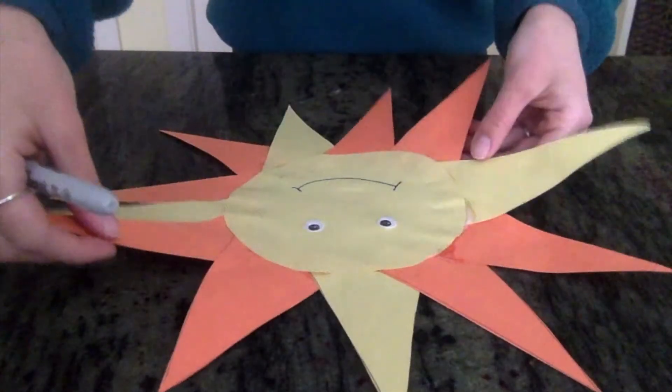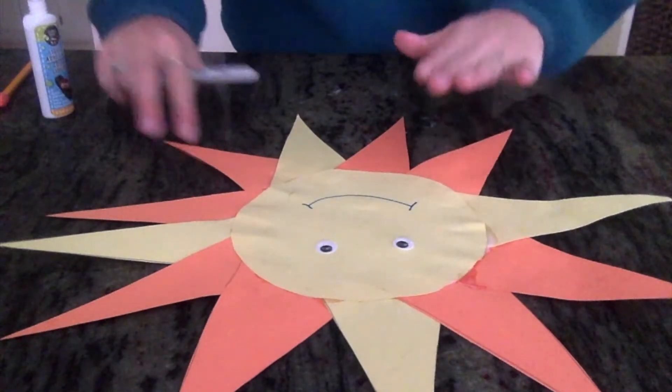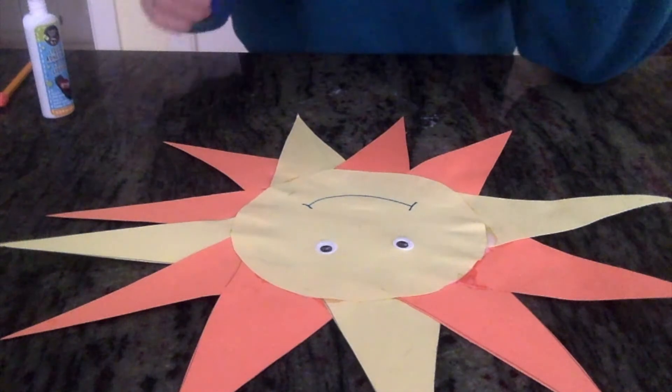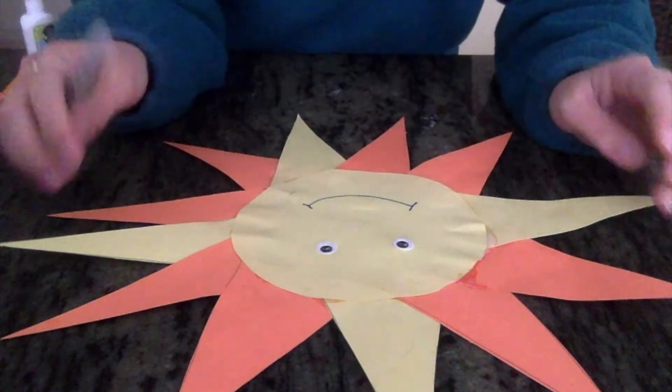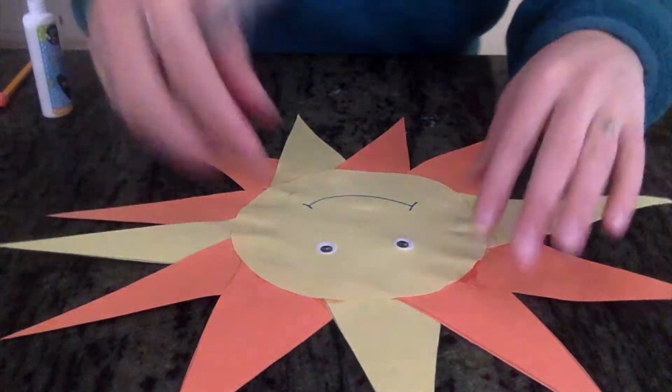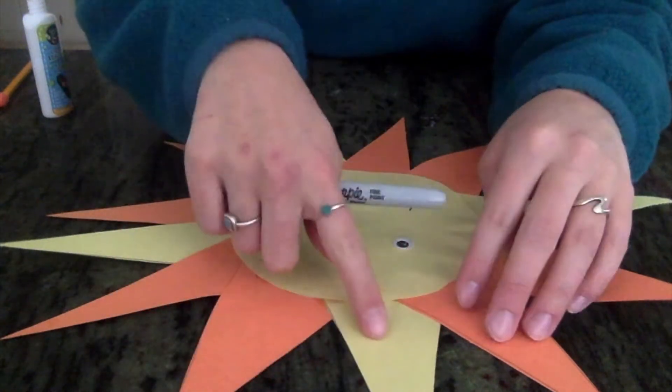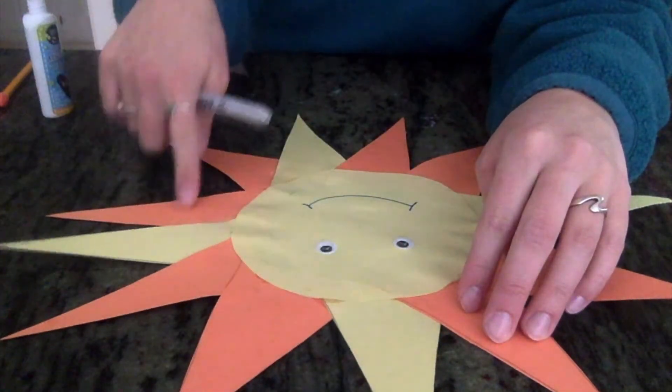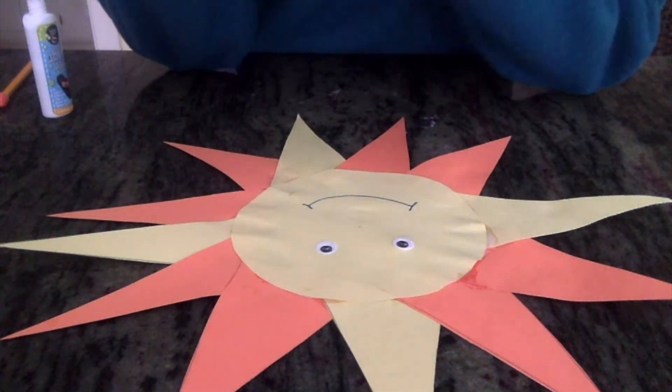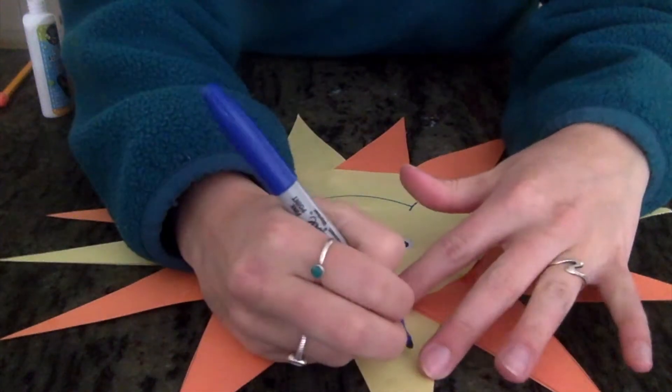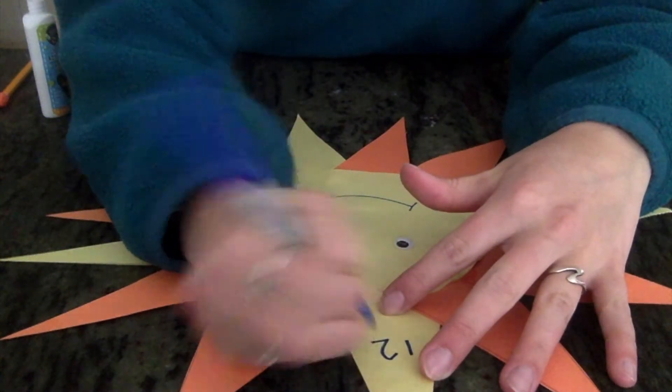And the next thing we are going to do is number our sun. So since this is going to be serving as a clock, the numbers on the rays are going to follow like a clock. Meaning up here, you're going to have 12.